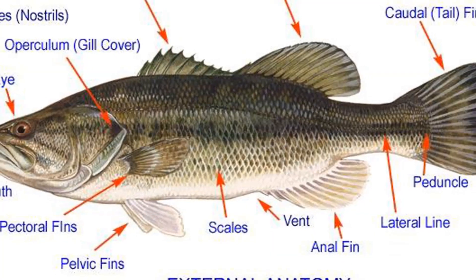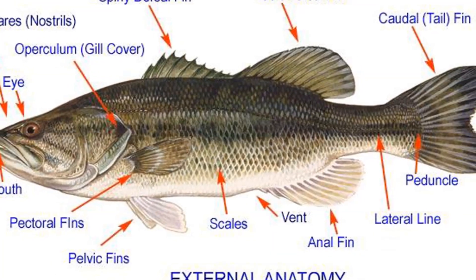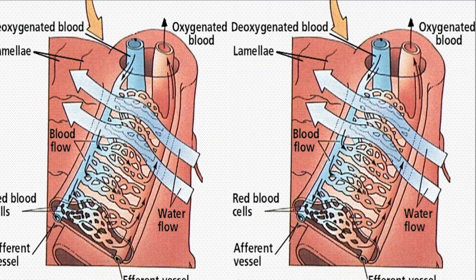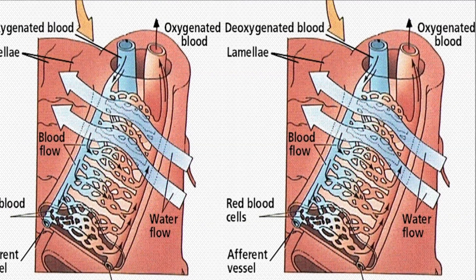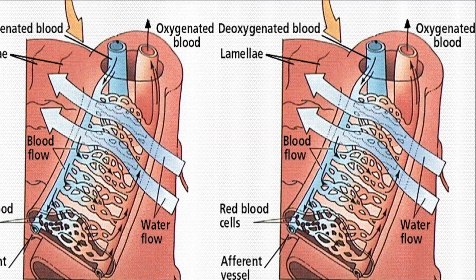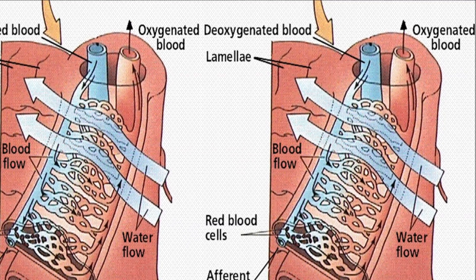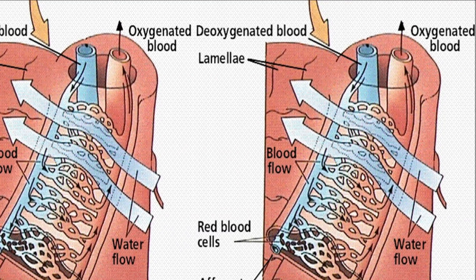Rakers filter out particles as the water flows through. Blood coursing through the filaments and lamellae delivers oxygen into the bloodstream.